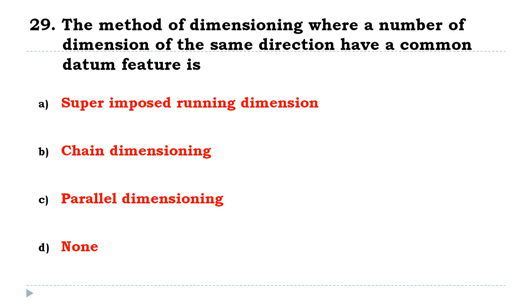The method of dimensioning where a number of dimensions of the same direction have a common datum feature is known as parallel dimensioning.